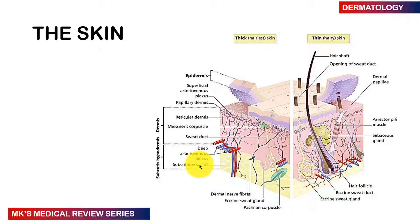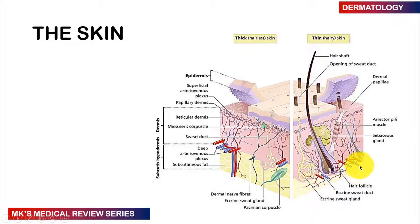Before going into the pathophysiology of acne, it is fundamental to understand the structure of the skin. There are two types of skin: thick skin, which is hairless and found on the palms and soles of the feet, and thin skin, which has hair and is found everywhere else. Both types have three main layers: the epidermis, the dermis, and the subcutaneous layer.